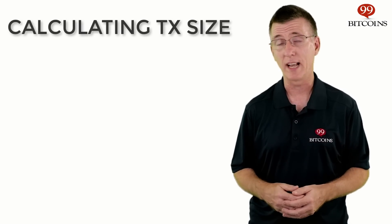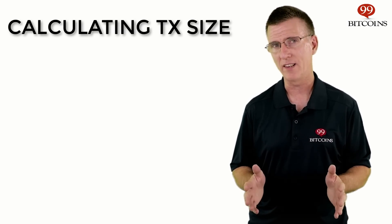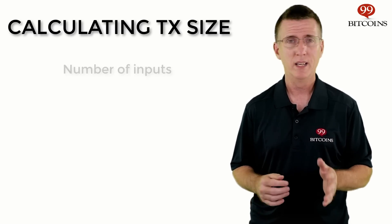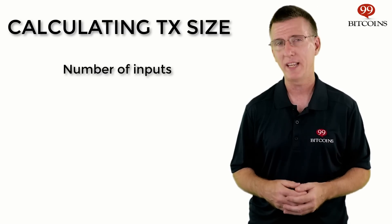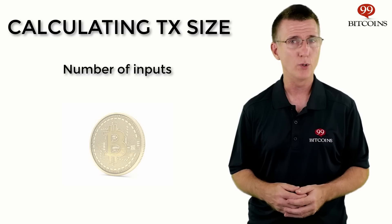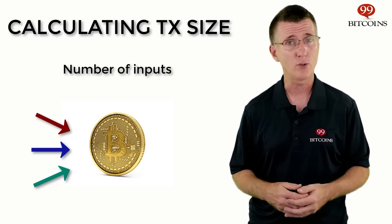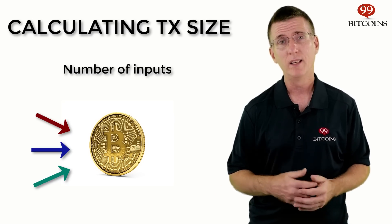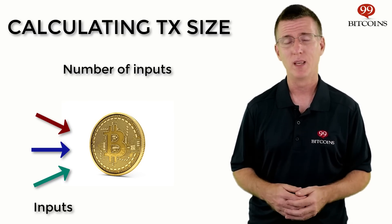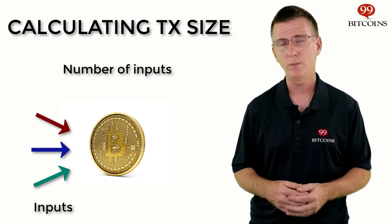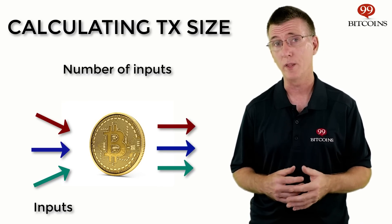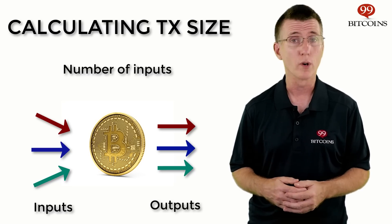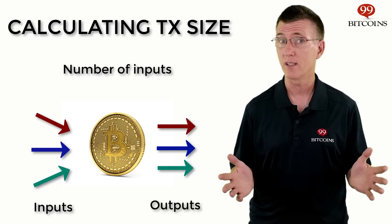So how is the transaction size calculated? A transaction size depends on a number of different factors. The first factor is the number of inputs. Each bitcoin you own, at its core, is just a reference to past transactions that were sent to you, adding up to the amount you own. These references are known as inputs. When you send bitcoins to someone, you're basically selecting different inputs sent to you in the past and forwarding them to the recipient as outputs. The more inputs your transaction is comprised of, the bigger its size.